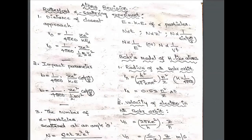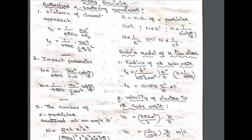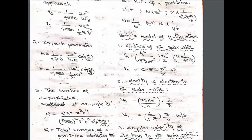In the Rutherford alpha scattering experiment, the first formula is the distance of closest approach R naught, given by R naught = (1/4πε₀) × Ze² / KE_alpha, or R naught = (1/4πε₀) × Ze² / (½ m_alpha v_alpha²).